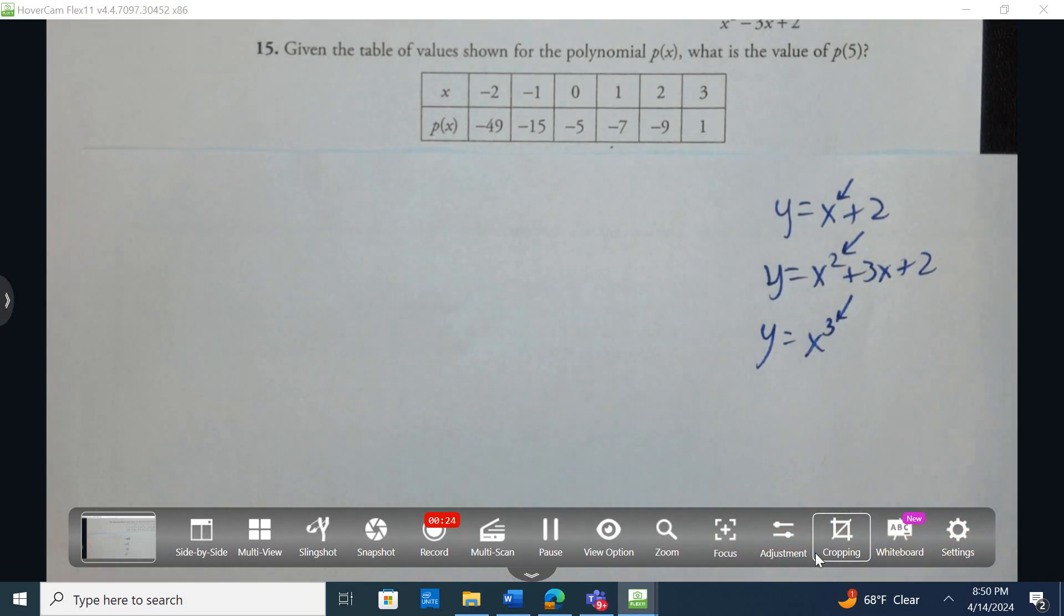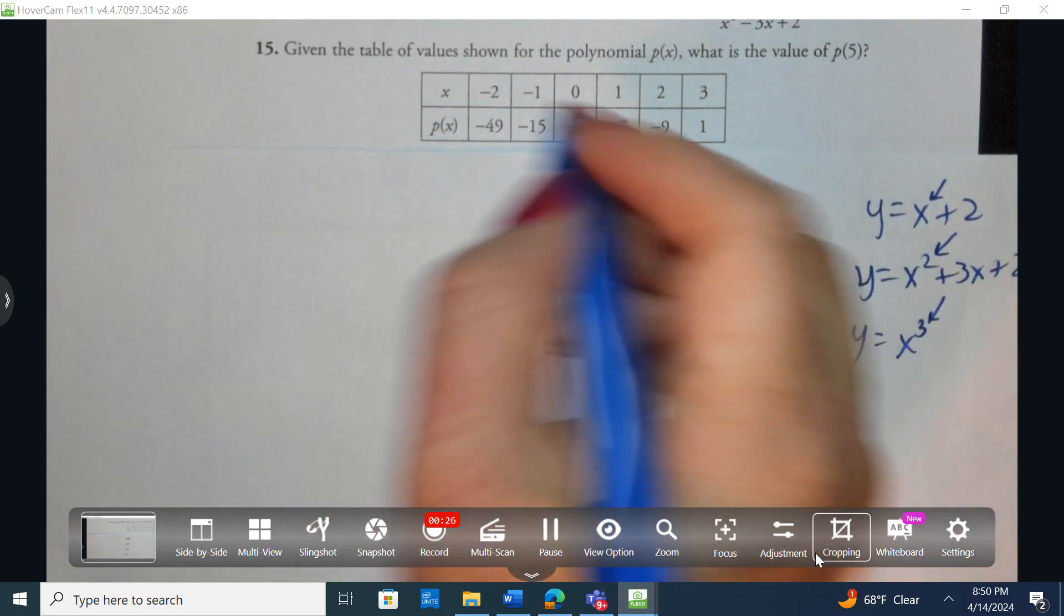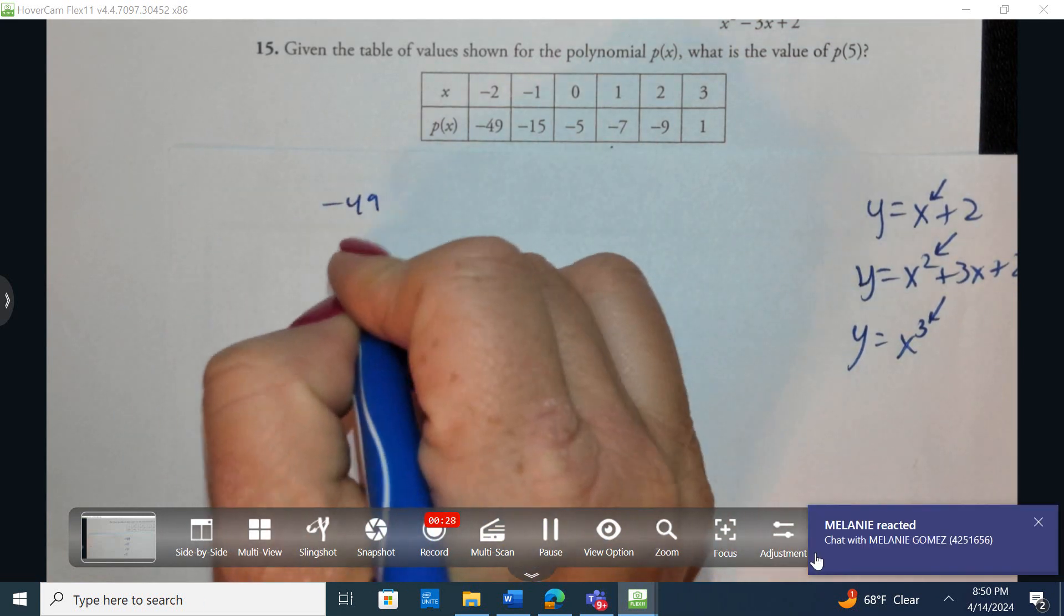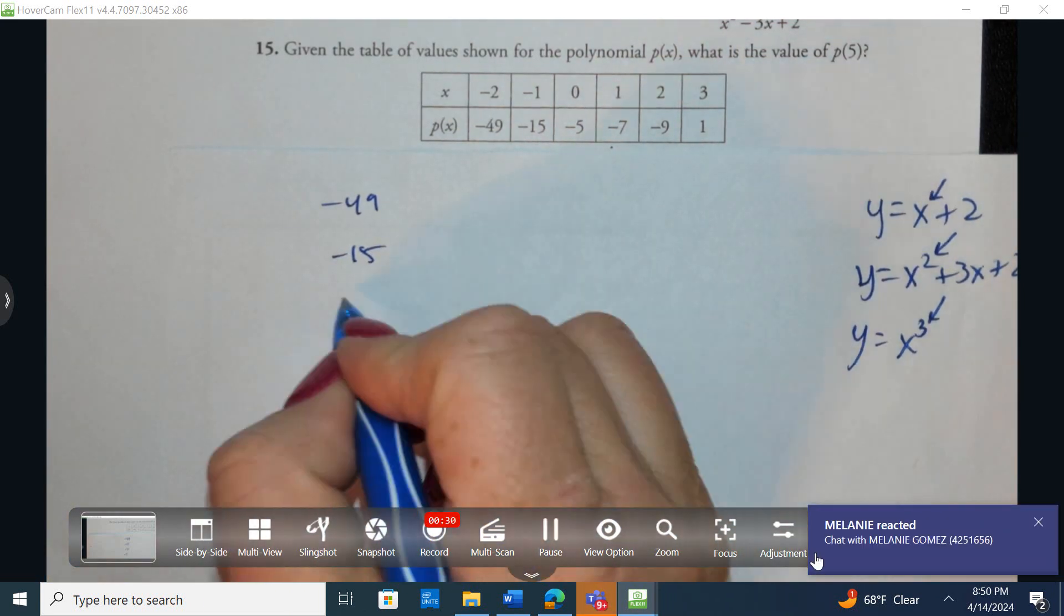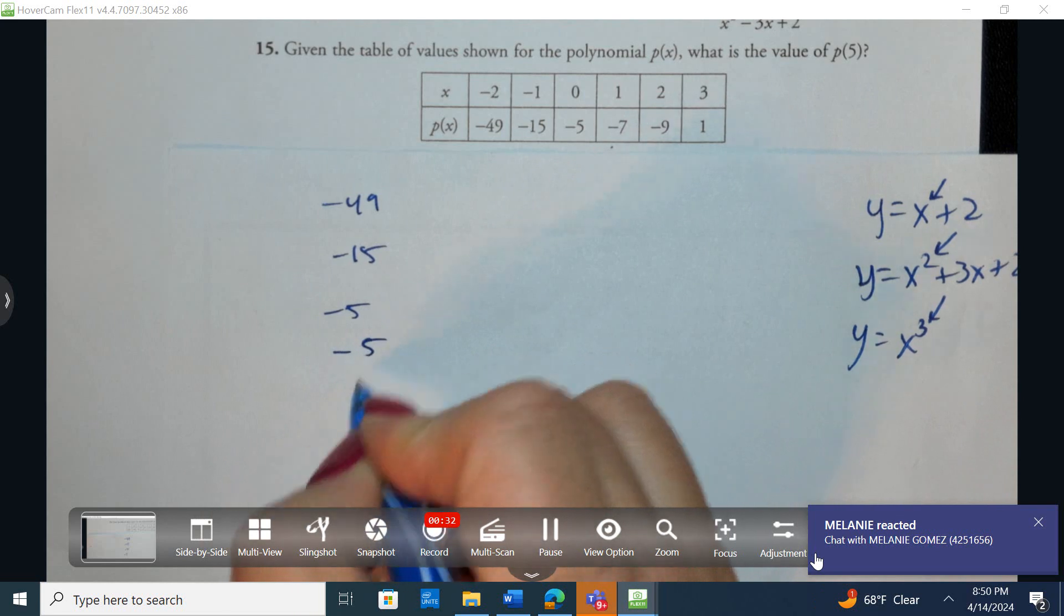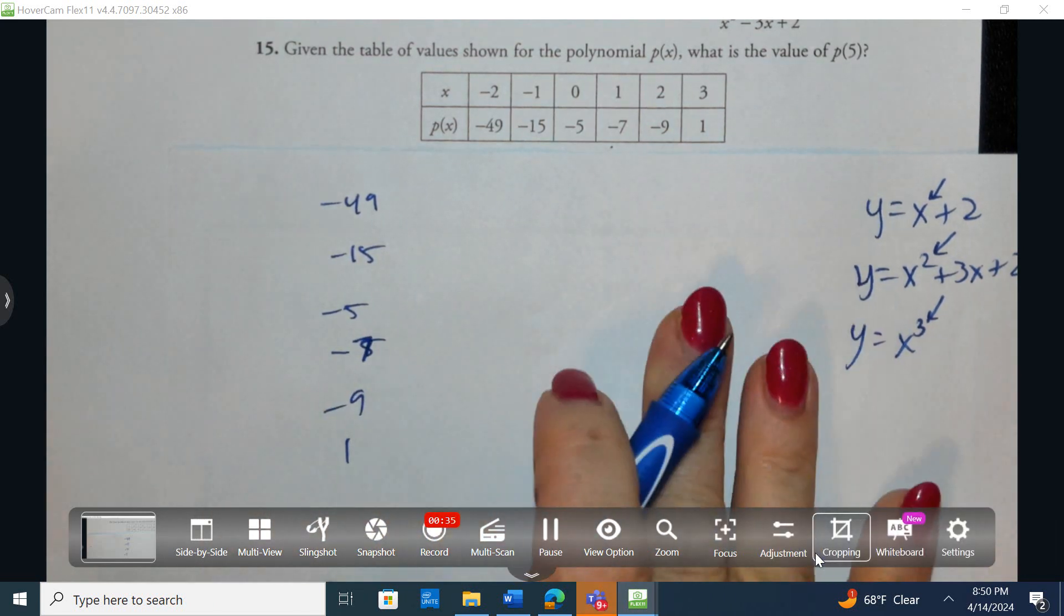So how do we determine that? I'm going to write down the outputs: negative 49, negative 15, negative 5, negative 7, negative 9, and 1.